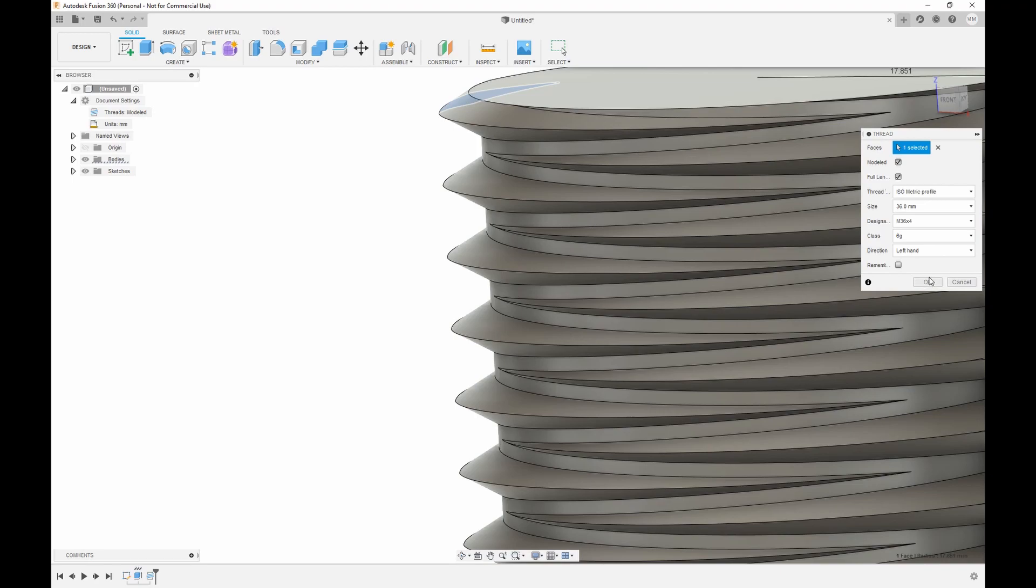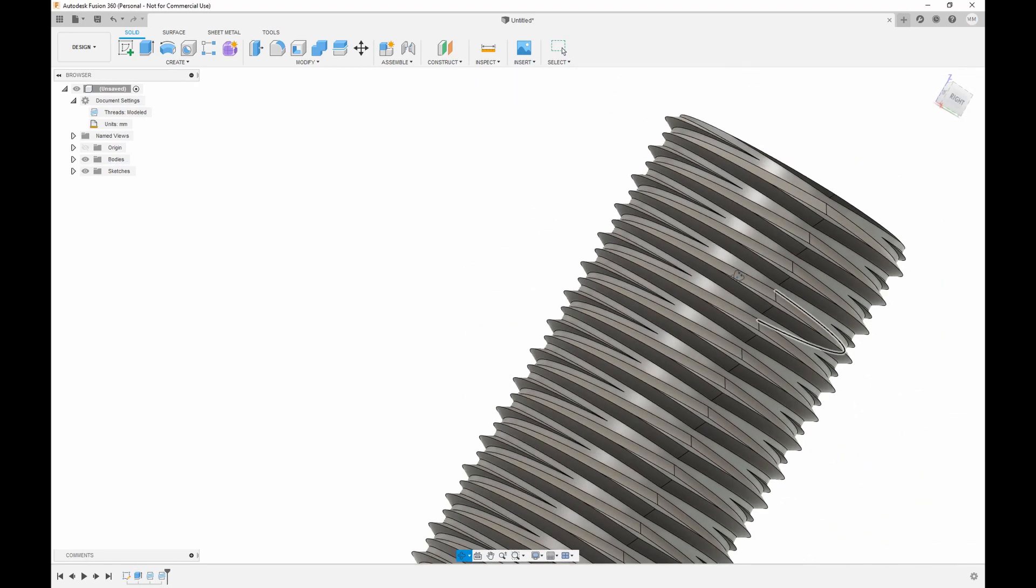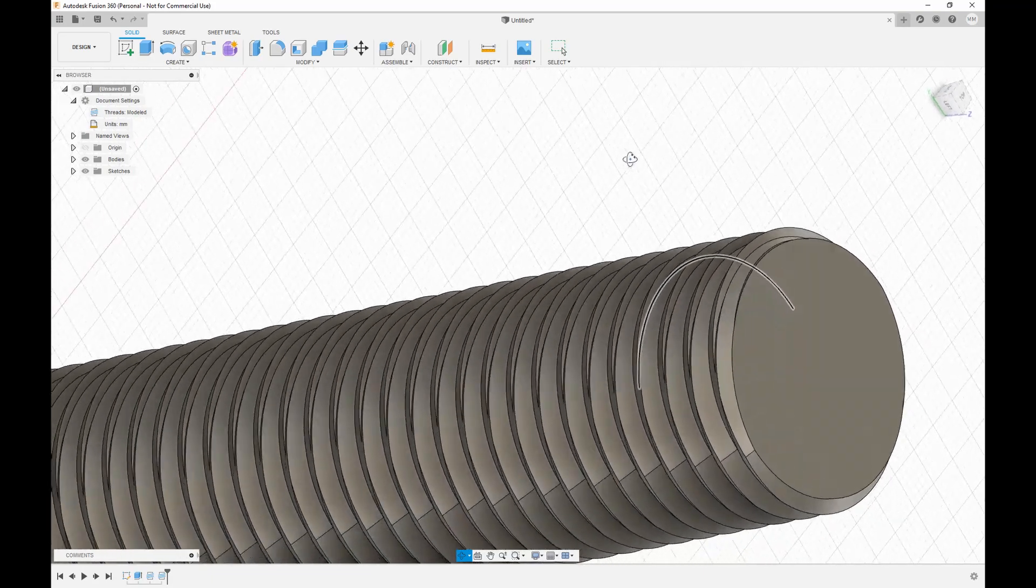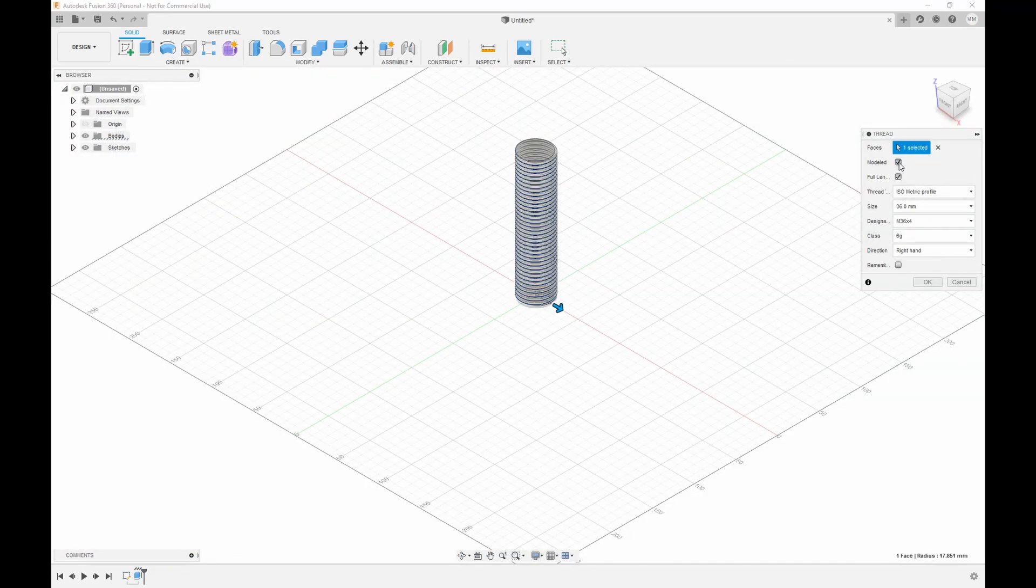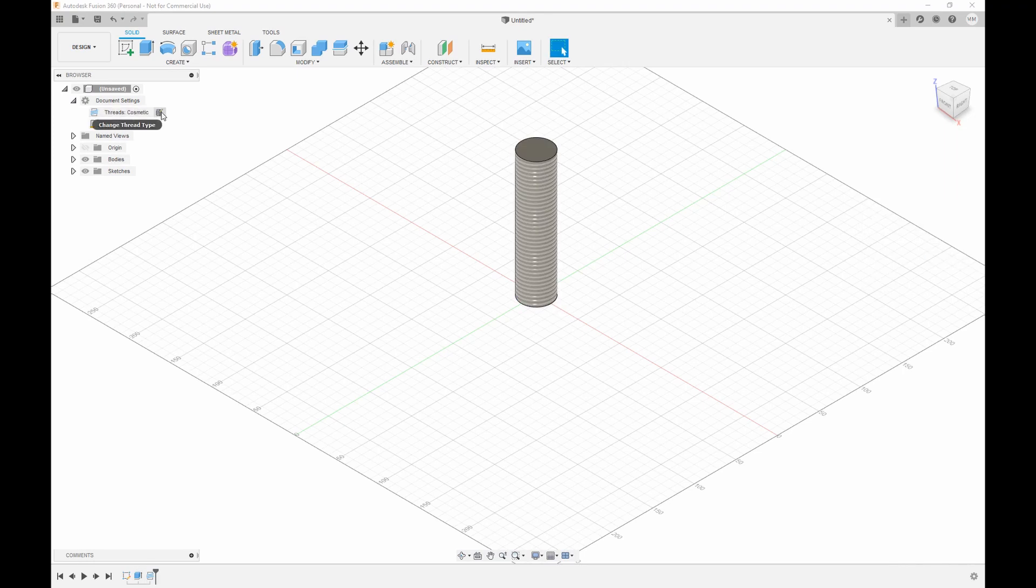This should be easy. Just open Fusion 360 and create a cylinder and add right sided thread and then left sided thread. Remember to set modeled option for your thread. You can do it in two ways: check the modeled checkbox while creating the thread or change the type under document settings.